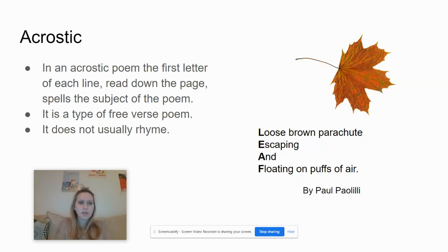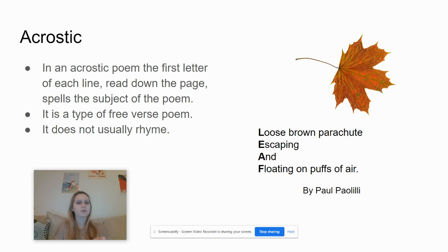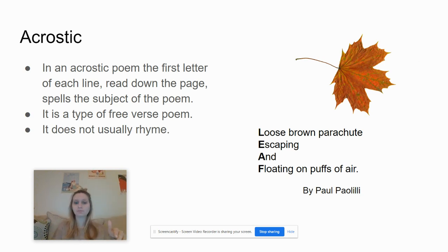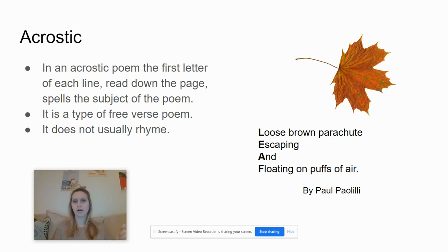This is an acrostic poem. These are pretty popular. The first letter in each line, when you read down the page, spells out the subject of the poem. It's a type of free verse and it normally doesn't rhyme. This example is called 'Leaf.' You can see going down the page it spells out L-E-A-F, and across it has a sentence that describes a leaf: 'loose, brown parachute, escaping and floating on puffs of air.'